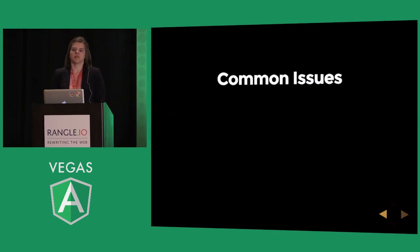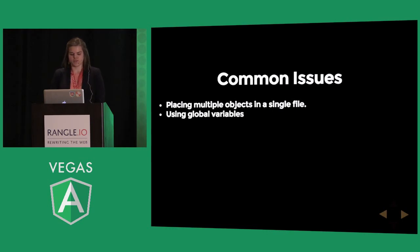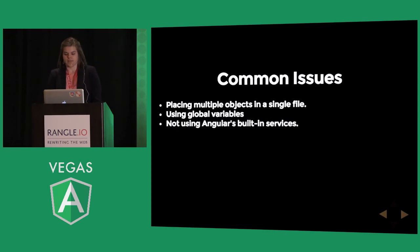There are several items I see all the time. One thing is placing multiple objects in a single file. We always hear we shouldn't do this — one controller per file, one directive per file, etc. I also tend to see a lot of global variables, where we're just hoping that when we call a global object in a controller file, it already exists somewhere in another file somebody else created. Not using Angular's built-in services is another issue — a lot of times I see people using setTimeout instead of the $timeout service, and all sorts of things like that.